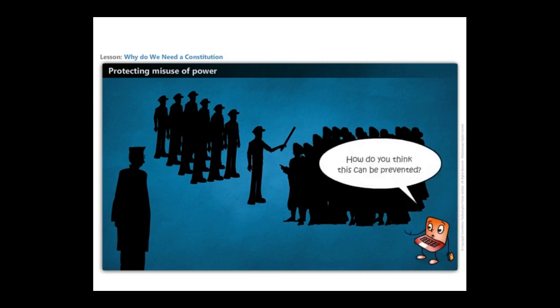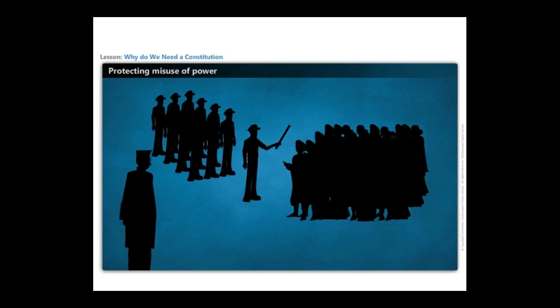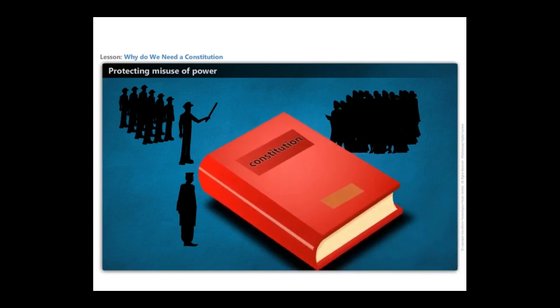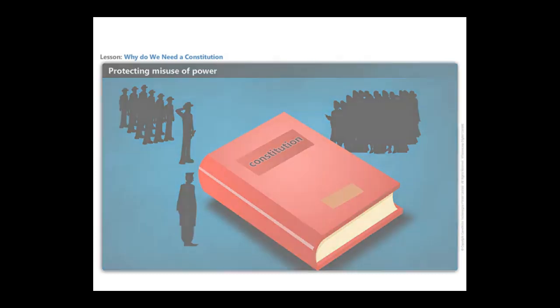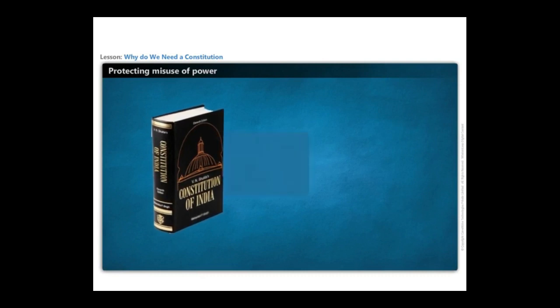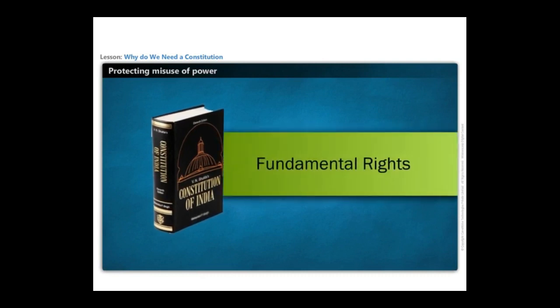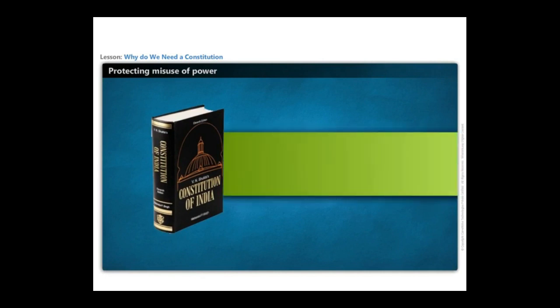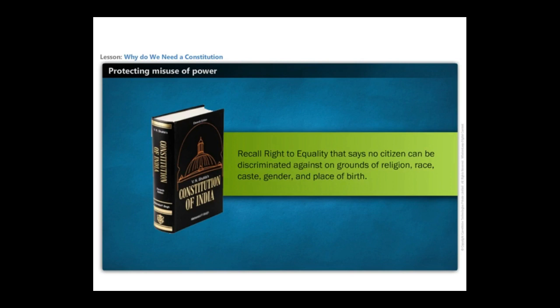How do you think this can be prevented? In democratic societies, the constitution often lays down rules that guard against this misuse of power by our political leaders. In the case of the Indian constitution, many of these laws are contained in the section on fundamental rights. Recall the right to equality, which says no citizen can be discriminated against on grounds of religion, race, caste, gender, and place of birth.